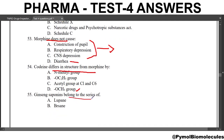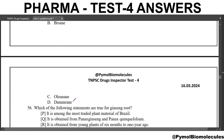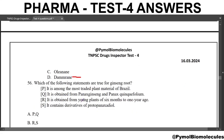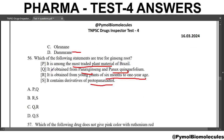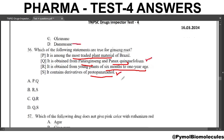Ginseng saponins belong to which series? The answer is dammarane. Next question: which of the following statements are true for ginseng root? The correct options are Q and S — that is, it is obtained from Panax ginseng and Panax quinquefolius, and it contains derivatives of protopanaxadiol. These two statements are correct in the case of ginseng root.